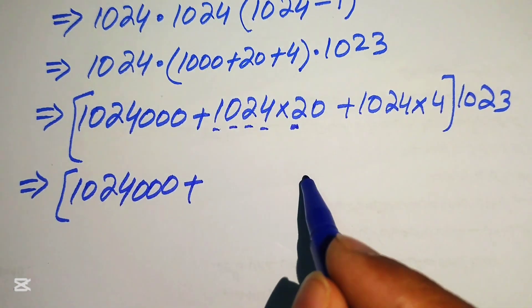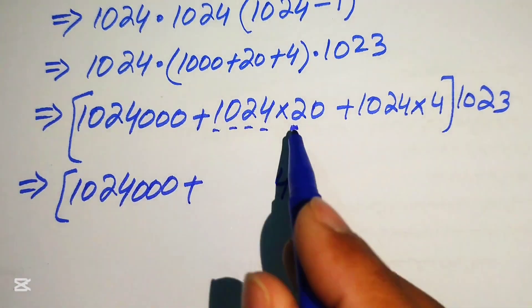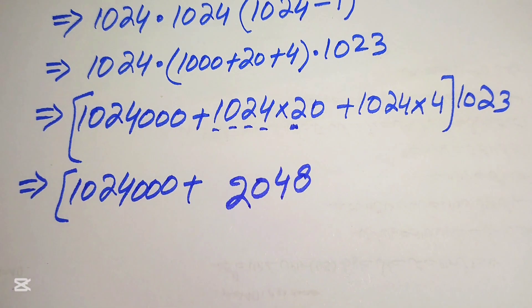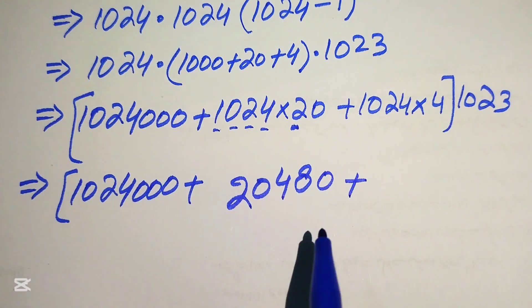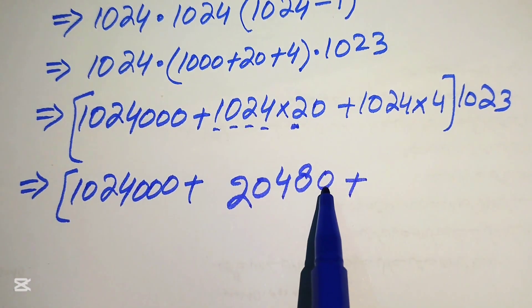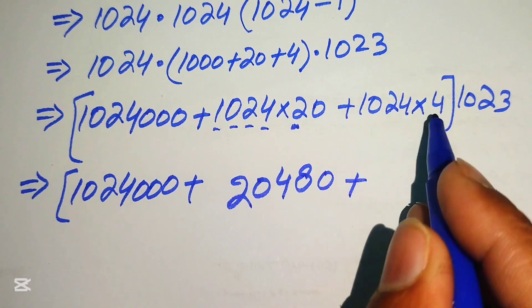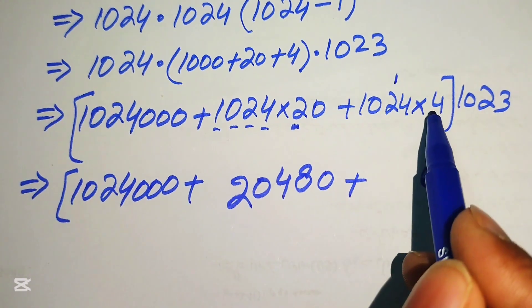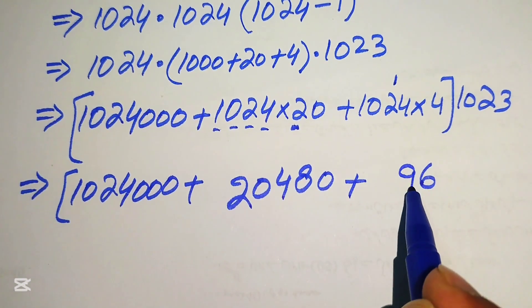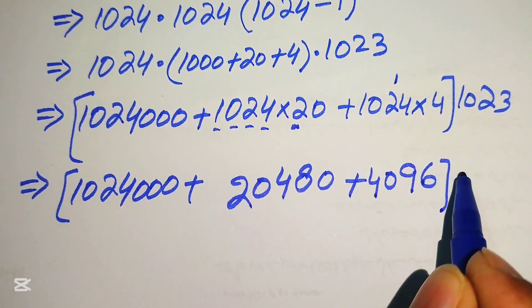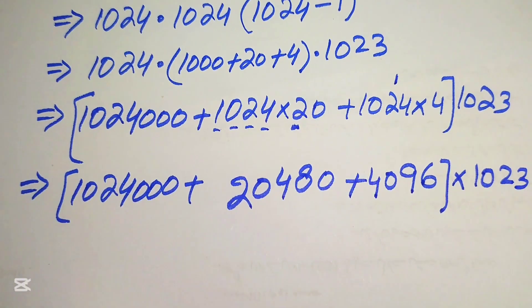Multiplying digit by digit: 2 fours are 8, 2 twos are 4, 2 zeros are 0, 2 ones are 2. For the multiplication by 20 we append a zero. Then multiplying by 4: 4 fours are 16 (write 6 carry 1), 4 twos are 8 plus 1 is 9, 4 zeros are 0, 4 ones are 4 — giving 4096.